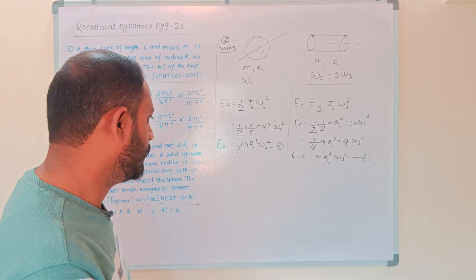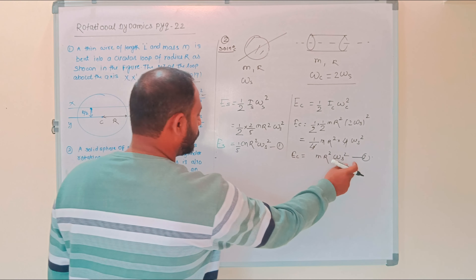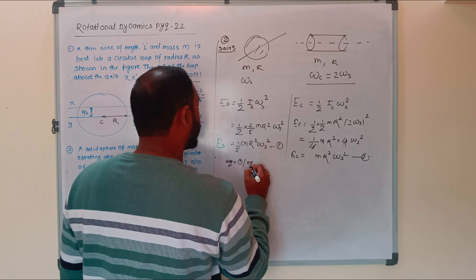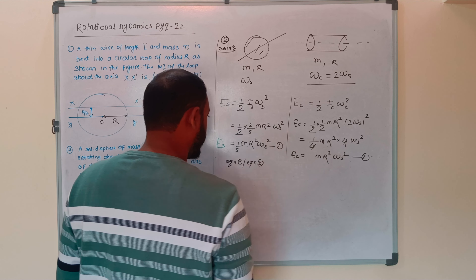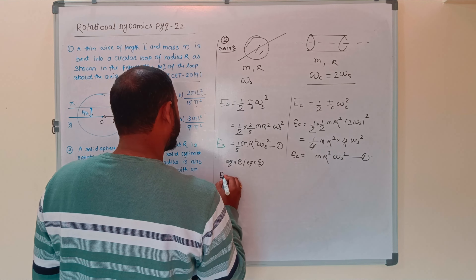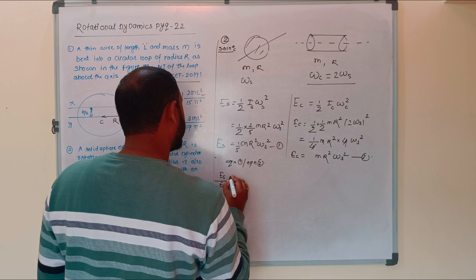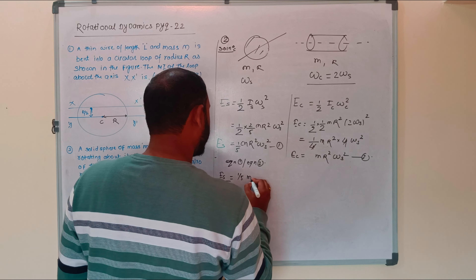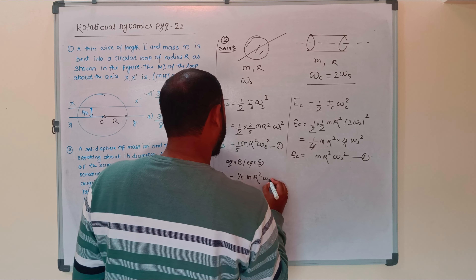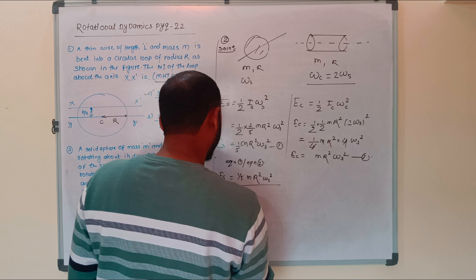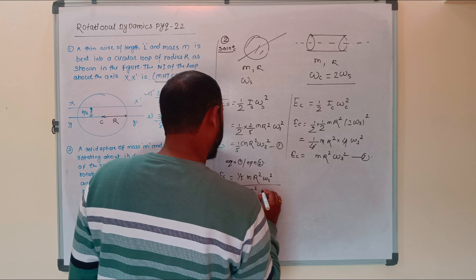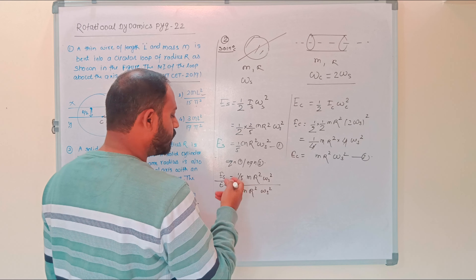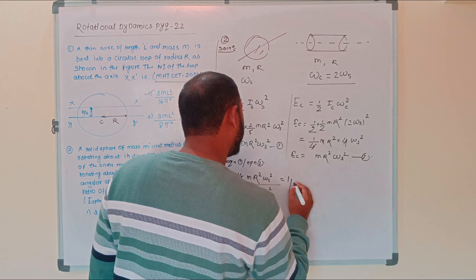Dividing equation one by equation two: [(1/5) M R² ω_s²] / [(1/2) M R² ω_s²]. The M R² and ω_s² cancel, leaving (1/5) / (1/2) = 2/10 = 1/5.